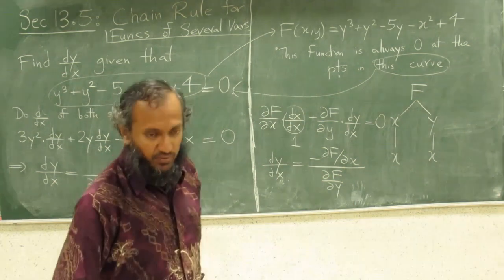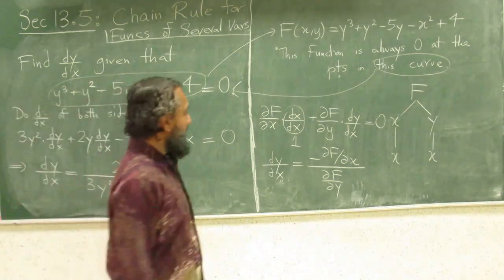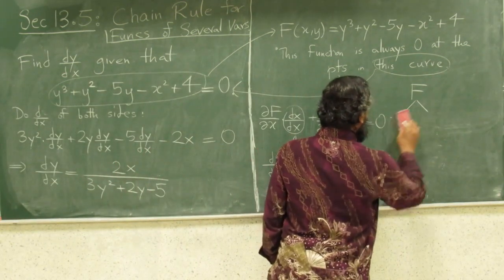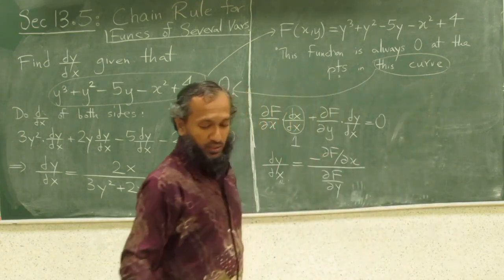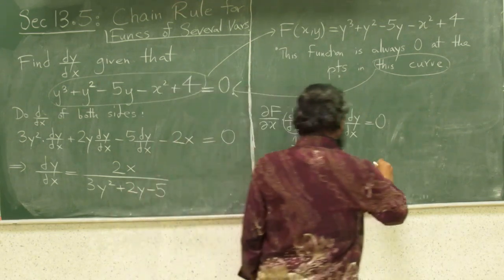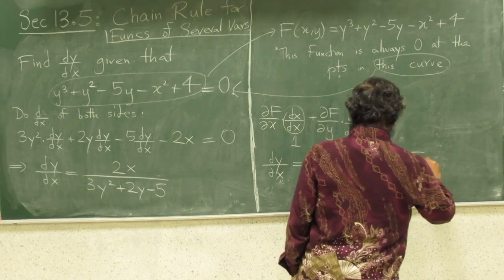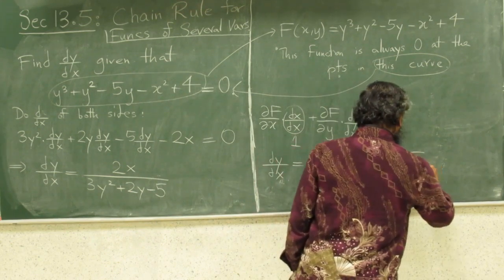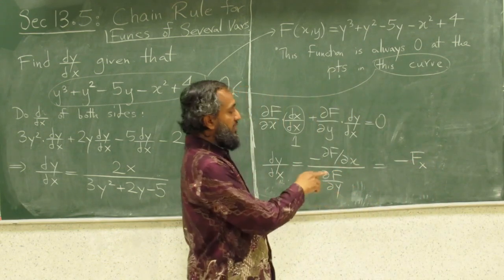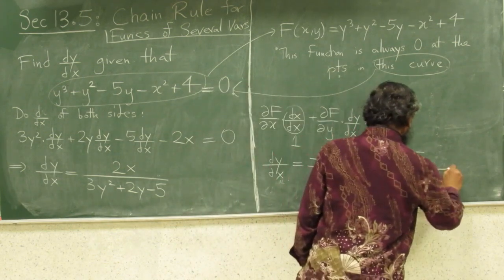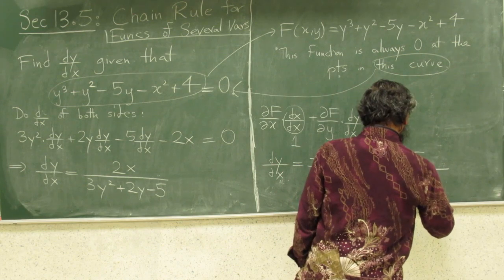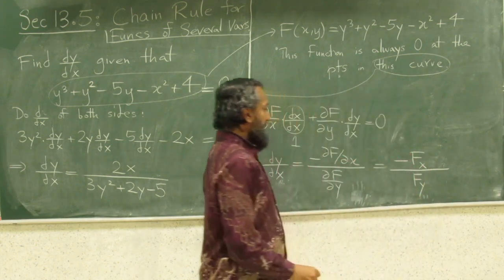And if you want to write it with a more compact notation, you will remember from your previous section on partial derivatives, you could write this as minus f, part, if the derivative is f with respect to x, subscript, remember the subscript notation of partial derivatives, and over.